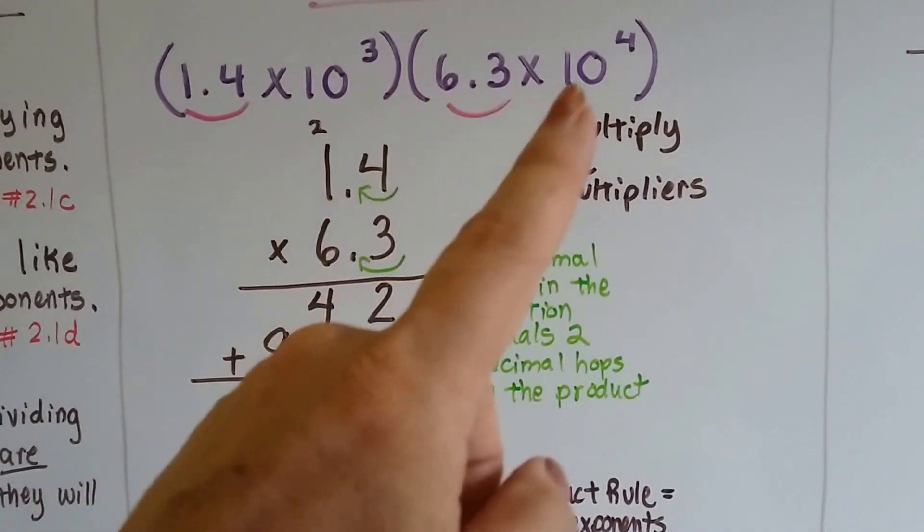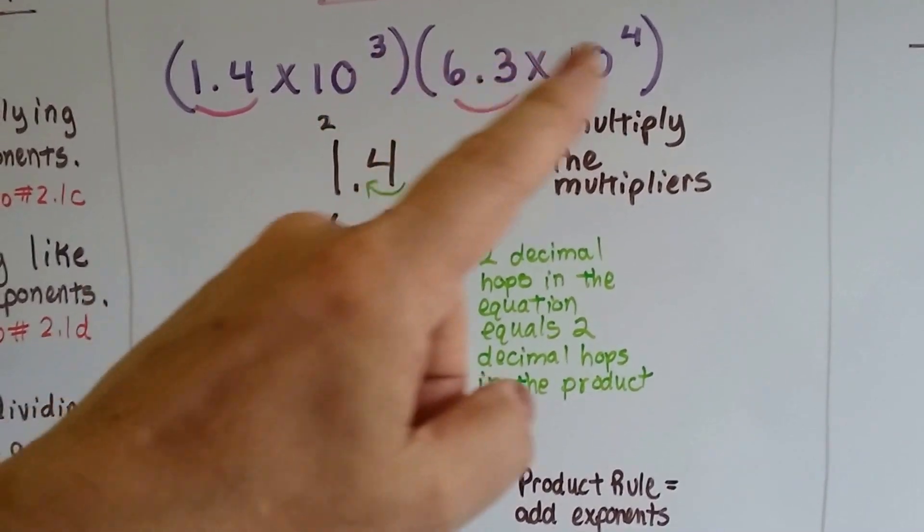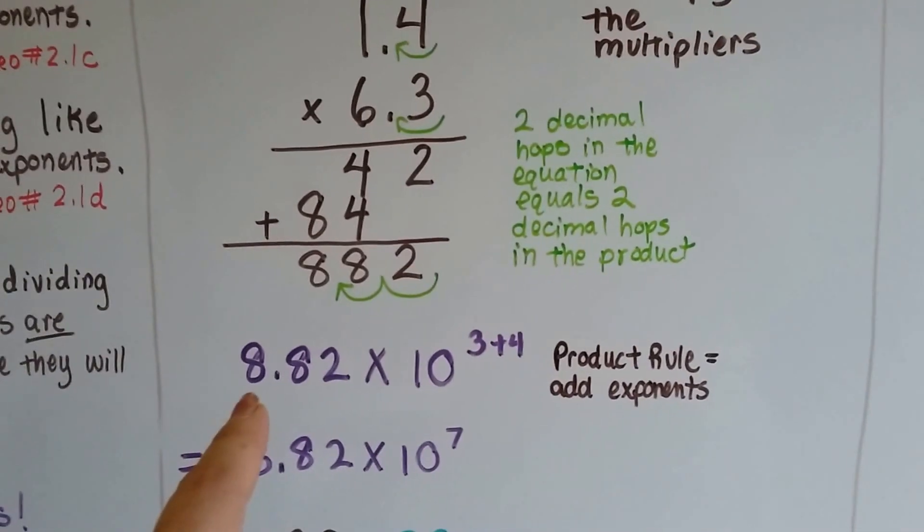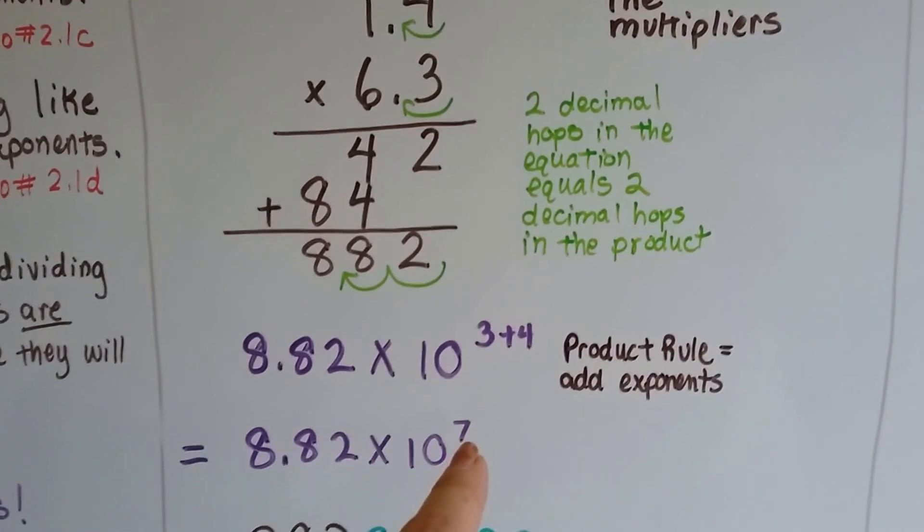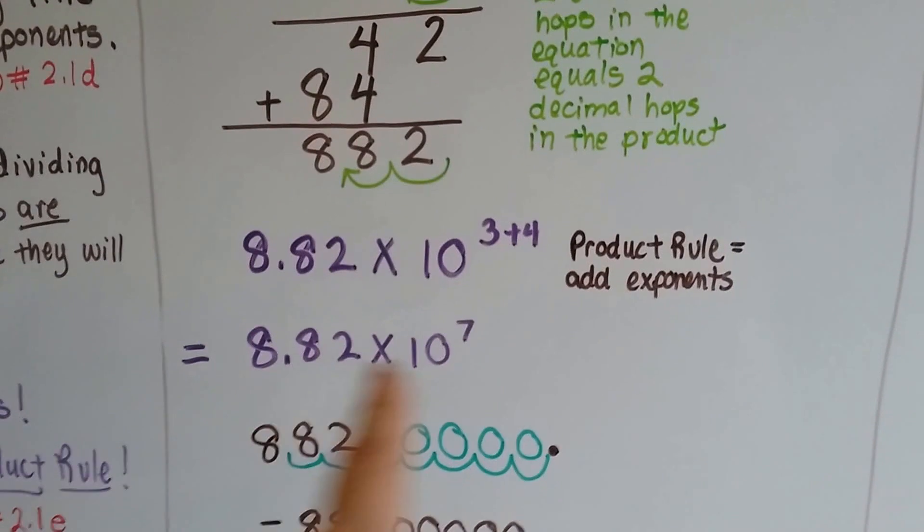Now, we deal with the powers of 10. We've got a 3 exponent and a 4 exponent. What we do is we write it as 8.82 times 10, and it's 3 plus 4. So, it's a 7. That's our answer.